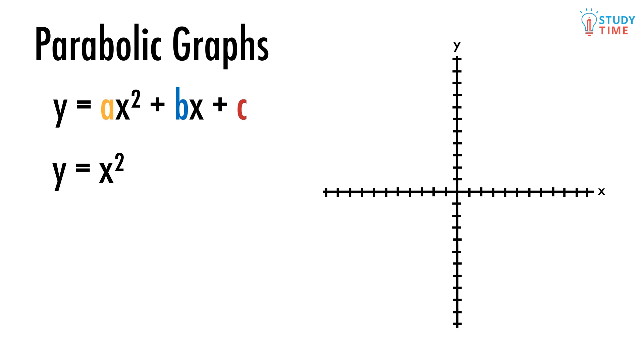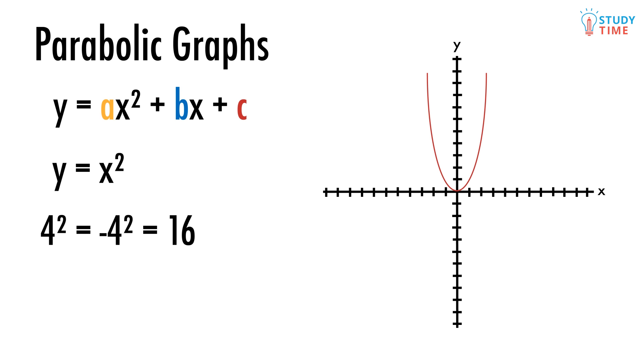Think of it this way. If we had the simple equation y equals x squared, then y would be the square of any x value. Now remember, when we square a negative number, we get the same answer as if it was a positive number. 4 squared and negative 4 squared both equal 16. So parabolas are symmetrical, and that's what makes them easy to use.